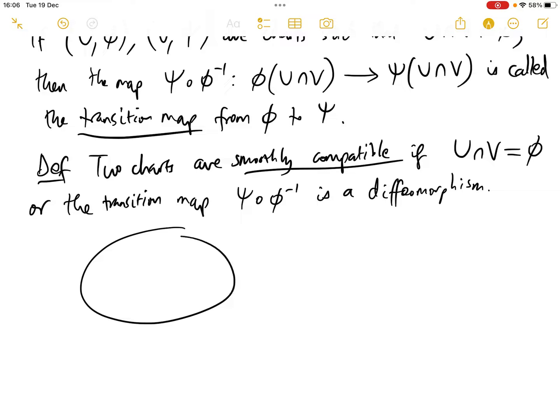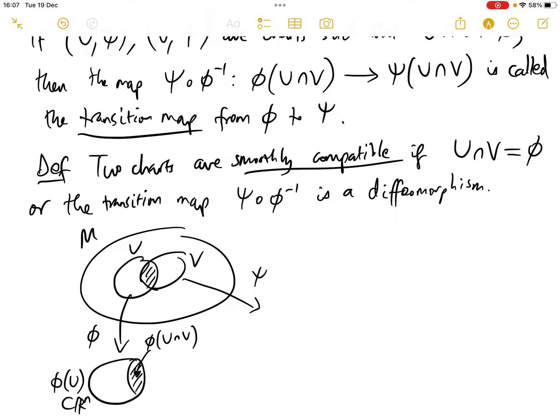Let's just draw a quick picture to see what's going on. So in our manifold M, we have two open sets U and V. Here's the intersection. The map phi takes U into phi of U, which is a subset of R^n, and this part here is phi of U intersect V. And then the map psi takes V into psi of V, which again is in R^n, and this part here is psi of U intersect V. And the transition map is this map, psi composed with phi inverse. This is the map between these two regions I've shaded in R^n.